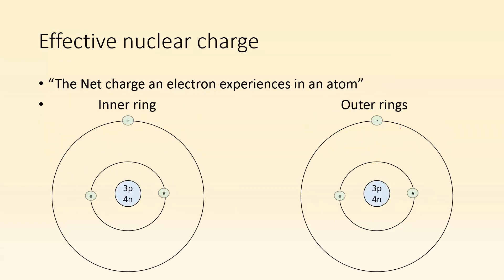This is where effective nuclear charge comes into play — this is how we can explain some things. The net charge an electron experiences in an atom is the effective nuclear charge. If this nucleus has three protons, its nuclear charge is plus three. The inner electrons are going to feel that entire plus three, so their effective nuclear charge is going to be plus three.